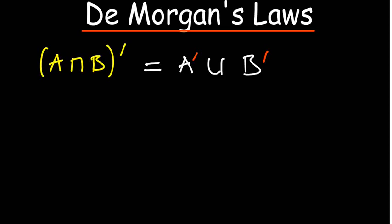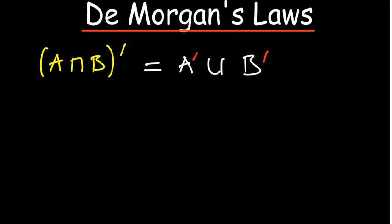De Morgan's laws. This is where we begin looking at the laws under set theory. We've already seen how we work with roster form and understand the notations of intersection and union. Now we face De Morgan's law.